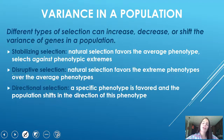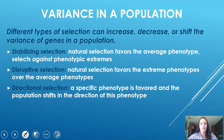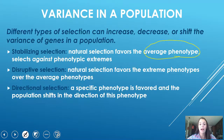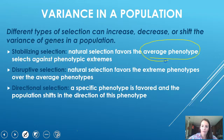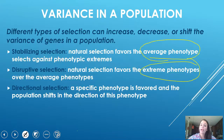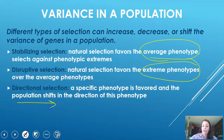There are three types of variance in a population. Different types of selection can affect what genes are expressed. The first is stabilizing selection, where the average phenotype is favored and the extremes are not. The second is disruptive selection, which is essentially the opposite — the extreme phenotypes are more favorable. And third is directional selection, where the population in general shifts one direction or the other.